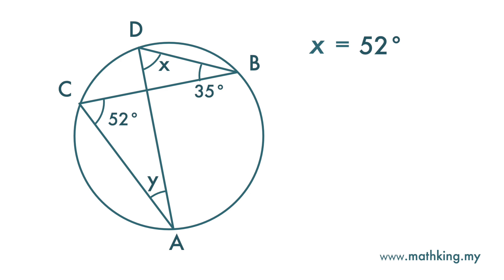Next, we look at this 35 degree angle at the circumference. It is an angle subtended by arc CD. This line rises from point C, touches point B, and then back to point D.